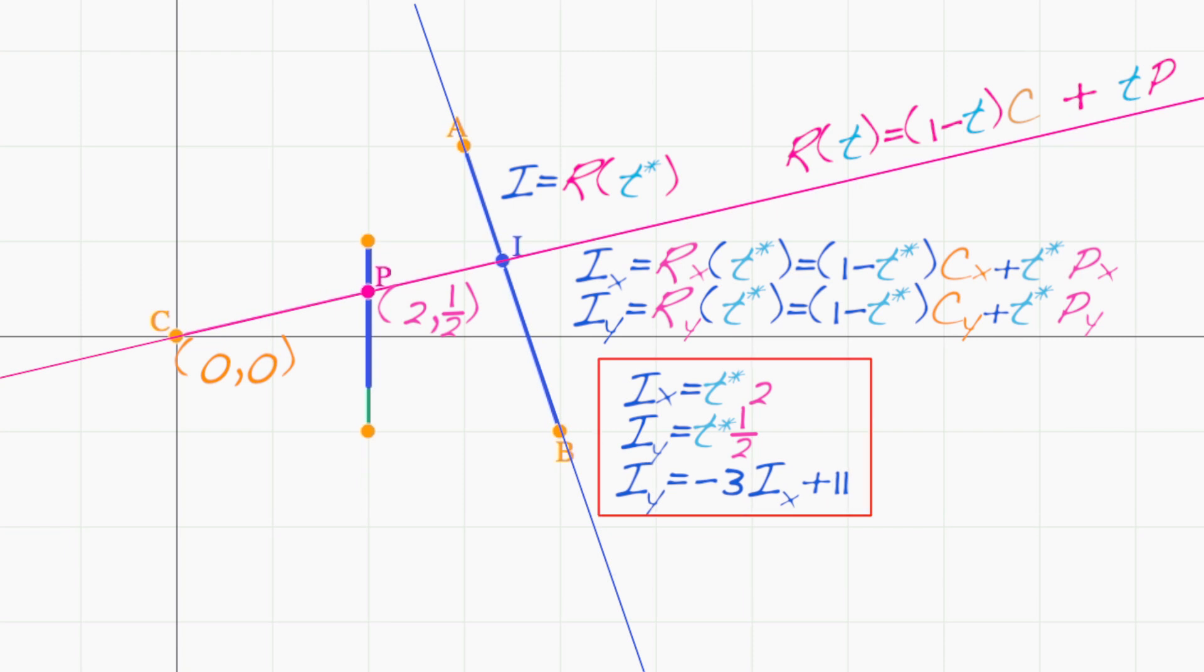So we have three equations in three unknowns: i sub x, i sub y, and t star.